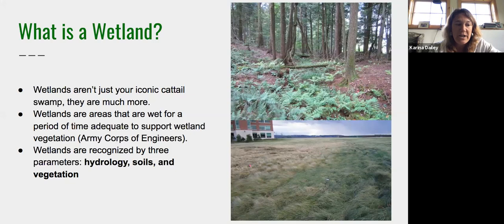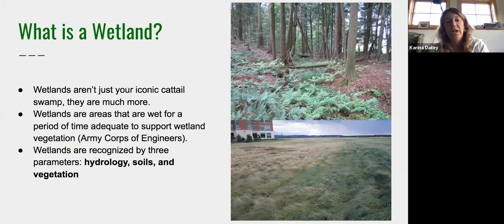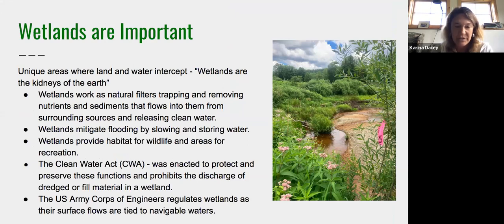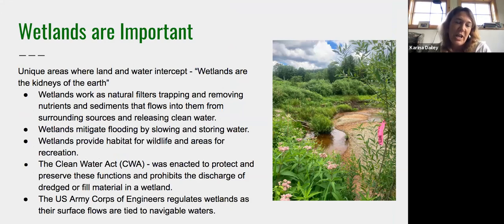Wetlands are defined by the Army Corps of Engineers, and there are three parameters: hydrology, soils, and vegetation. There are indicators for each parameter, and you have to have all three to have a wetland. If you don't have hydrology, then you don't have a wetland — you could have the vegetation and the soils, but without the hydrology it doesn't qualify.